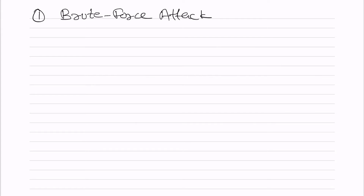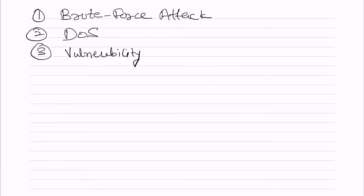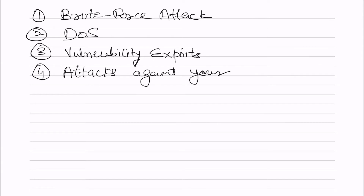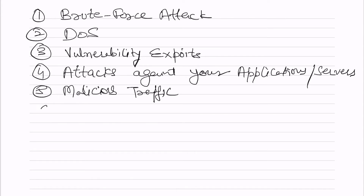IDS detects denial of service attacks and detects vulnerabilities. These vulnerabilities try to exploit your environment — they are basically a weakness or known problem in the software. Attackers always try to use those methods to enter your network, so IDS will detect these kinds of exploit attacks. It also detects attacks against your applications, workstations, or servers, and it detects malicious traffic.